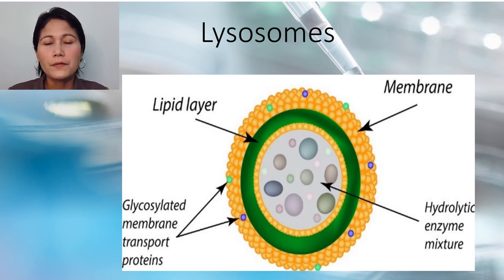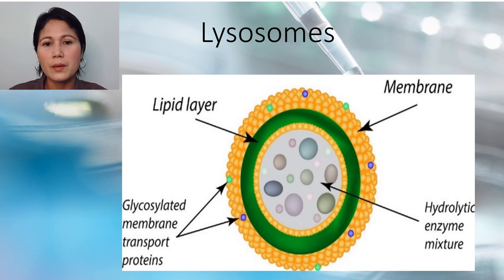Another function is autolysis. It refers to the killing of the entire set of cells by breakdown of the lysosomal membrane. It occurs during amphibian and insect metamorphosis. That is why the lysosome is sometimes called a suicide bag.